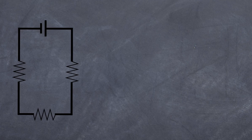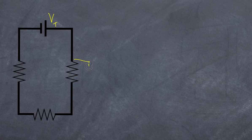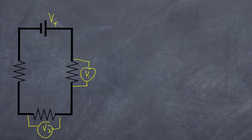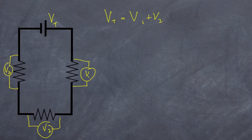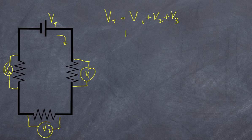As a quick recap, in a series circuit we have three resistors in a row. The voltage drops across each resistor — V1, V2, and V3 — add up to the total voltage supplied. This demonstrates conservation of energy. The current flowing through the circuit remains constant throughout a series circuit.